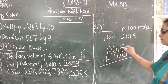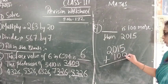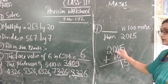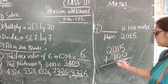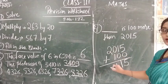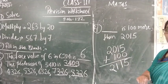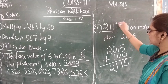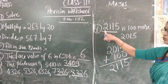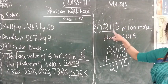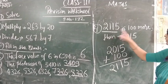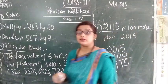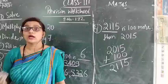5 plus 0 is 5, 1 plus 0 is 1, 0 plus 1 is 1, 2 as it is. So answer is 2115. So here 100 more than, more than means here we have to add.